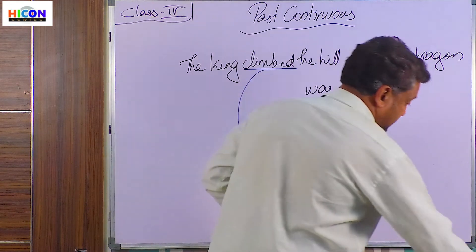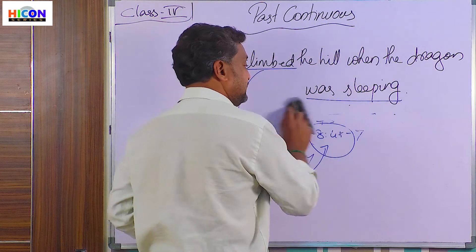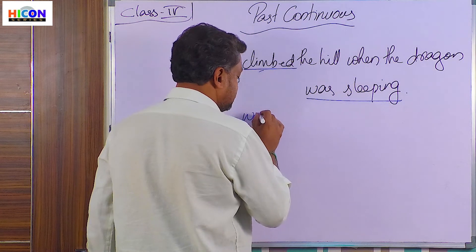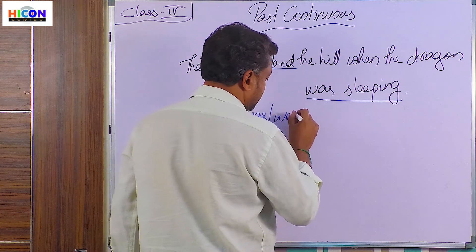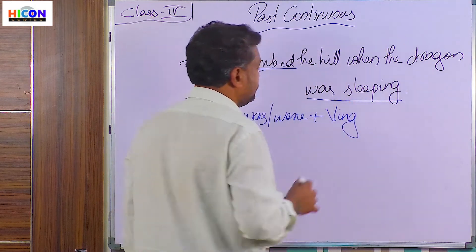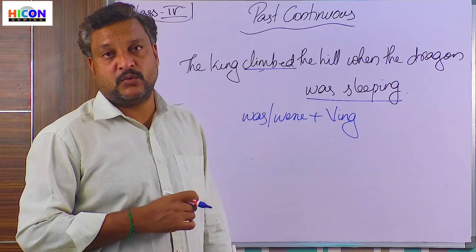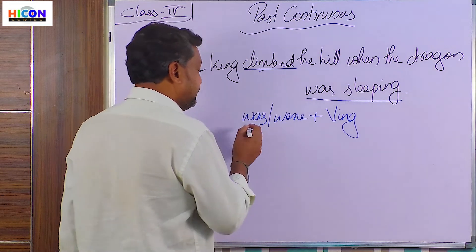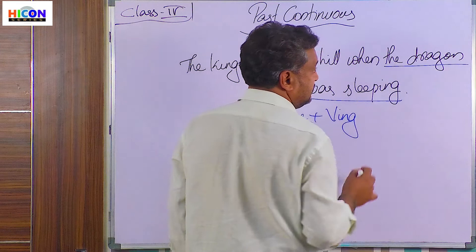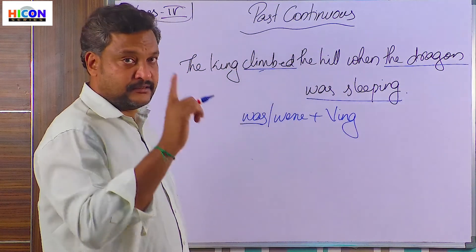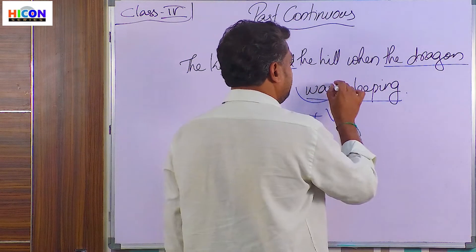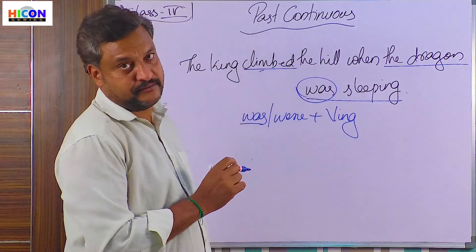The structure of past continuous tense is: was or were plus the ing-form of the verb. If the subject is singular, for example 'the dragon,' we use 'was' — because the dragon is a singular subject. That is why we used 'was' here.